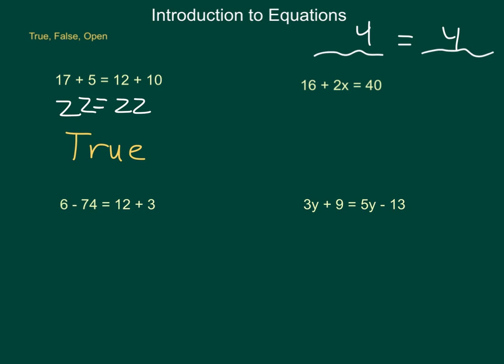Our second one, 16 plus 2x equals 40. Because we have the presence of a variable inside of this equation, this is what's called an open equation. Depending on the value for x that is assumed, we have either a true or a false equation. But because we don't have that given value for x, this is open until more information comes along.